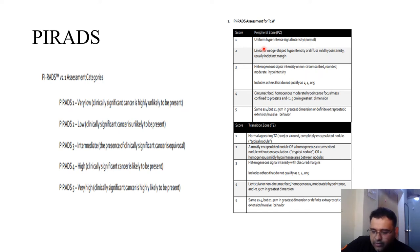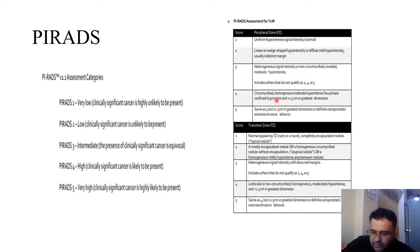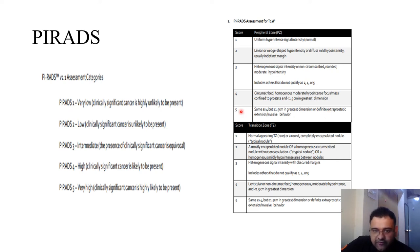For the peripheral zone on T2 imaging: a uniform hyperintense signal (normal) scores 1. A linear or wedge-shaped hypointense signal scores 2. Heterogeneous non-circumscribed rounded signal scores 3. A circumscribed homogeneous moderately hypointense signal with greatest dimension less than 1.5 cm confined to the prostate scores 4. If the greatest dimension exceeds 1.5 cm or there is evidence of extraprostatic invasion, a score of 5 is assigned.